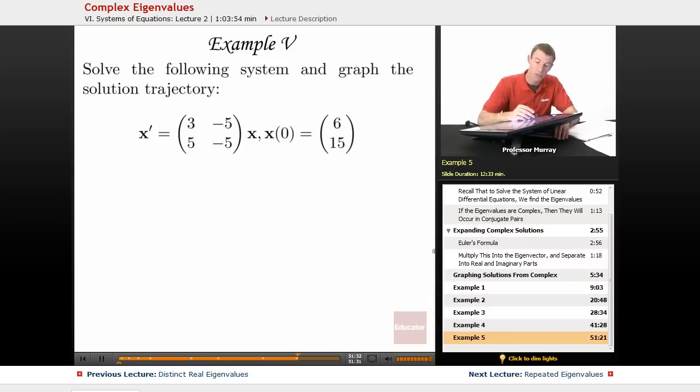This is x' = (3, -5; 5, -5). You'll notice that that's the exact same one as before, so we're going to start with our general solution from before, but now we've also got this initial condition, x(0) = (6, 15). So we're going to use that initial condition to find the values of the constants in the general solution from before.